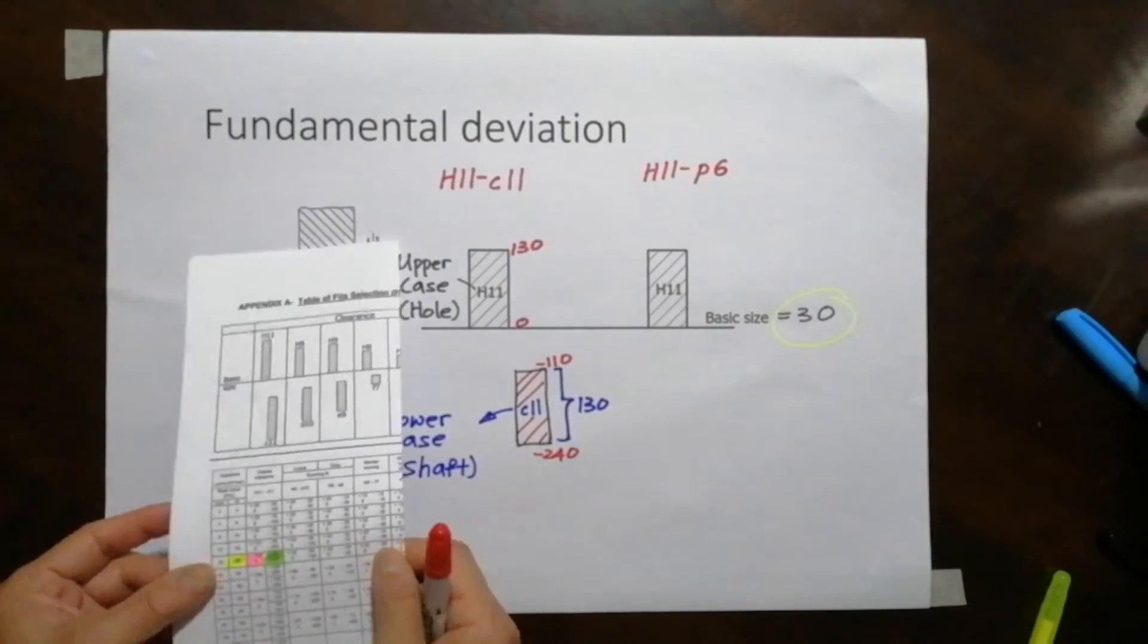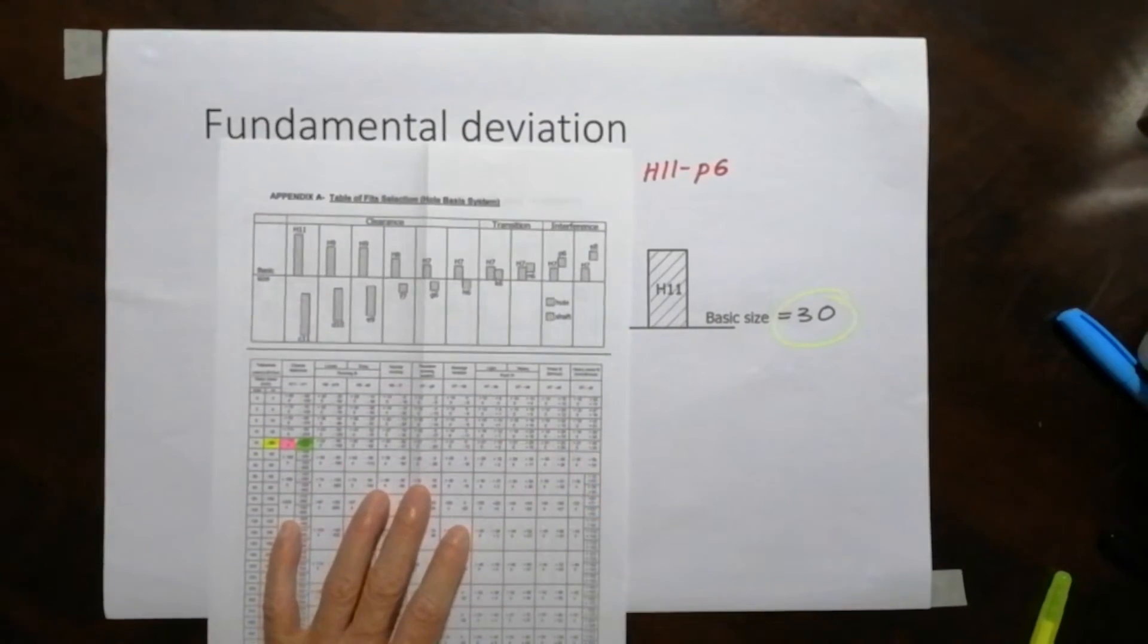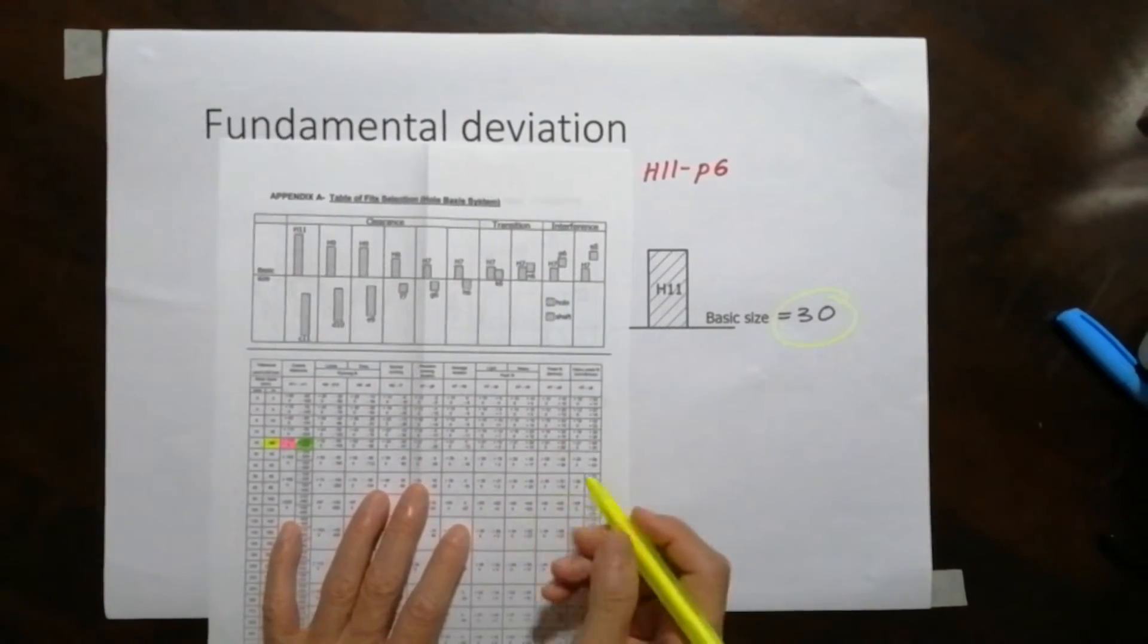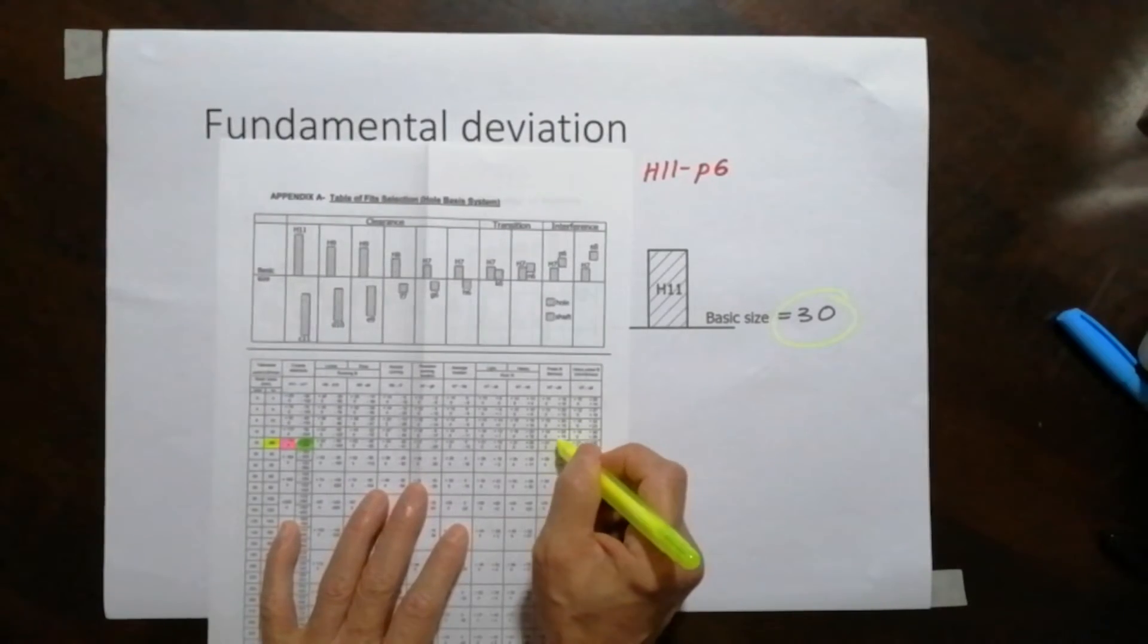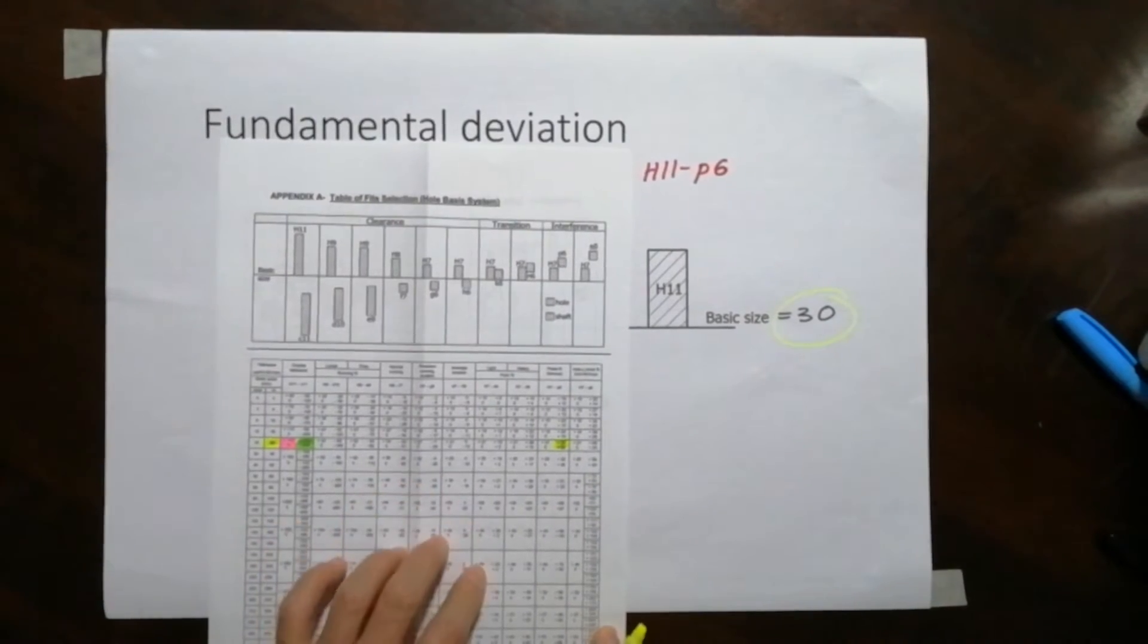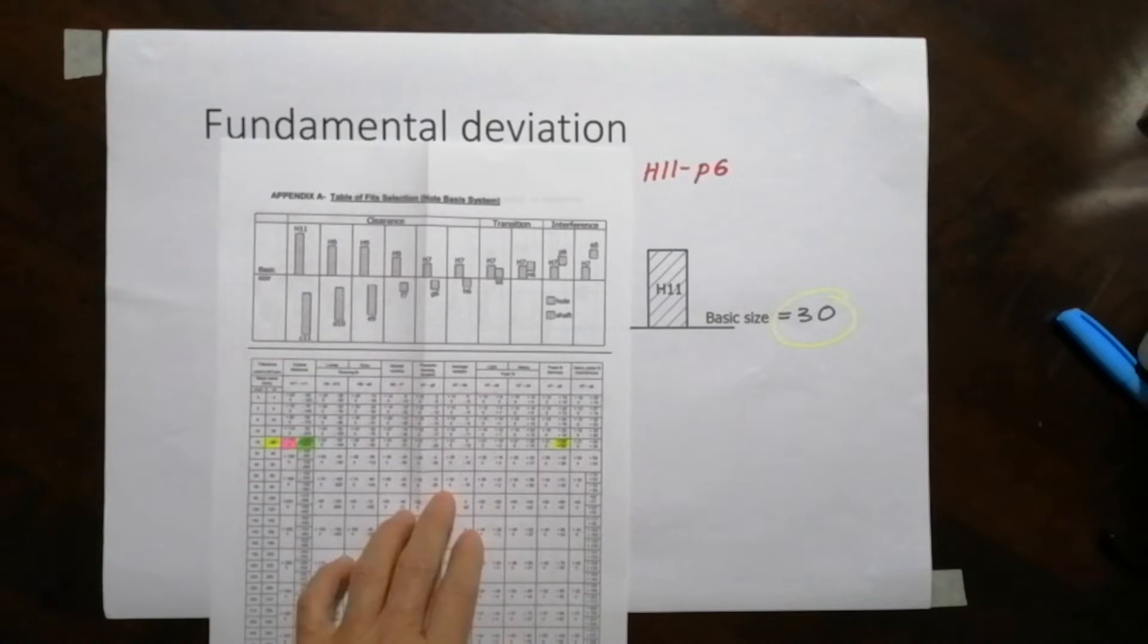I need to look at the, I need to highlight the color first. P6 is this color. This is the two values I need to take from there. So from there I can look at it and say that it is actually plus 22 plus 35.